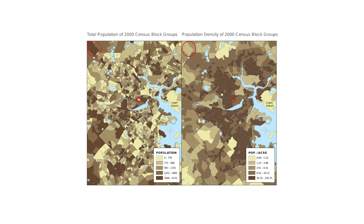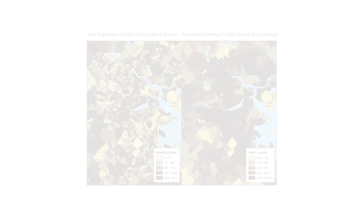A common error when producing choropleth maps is to encode raw data values such as population, rather than using normalised values — for example, calculating population per square kilometre — to produce a density map.